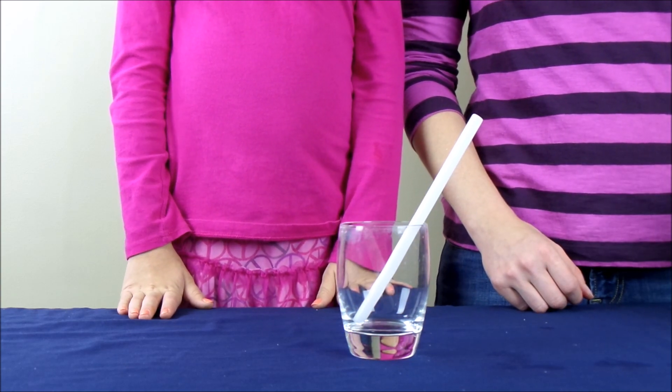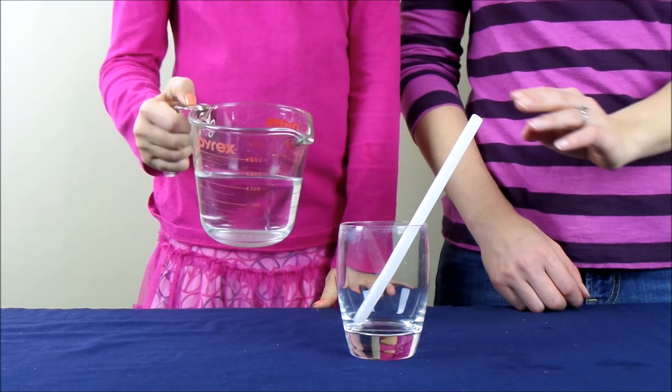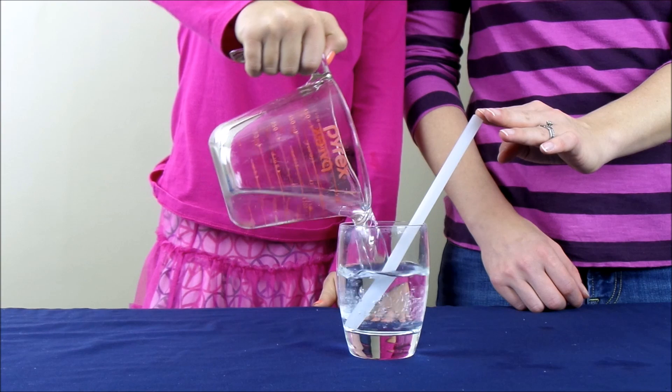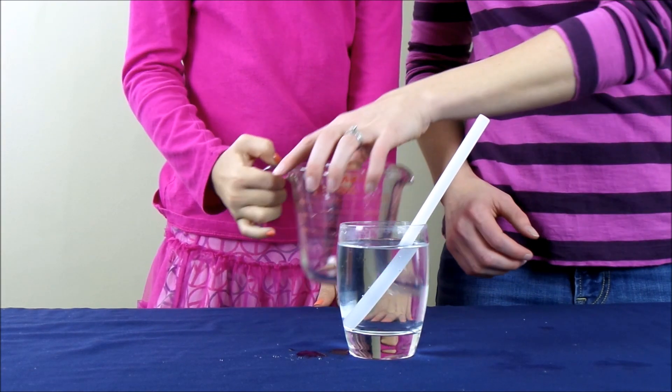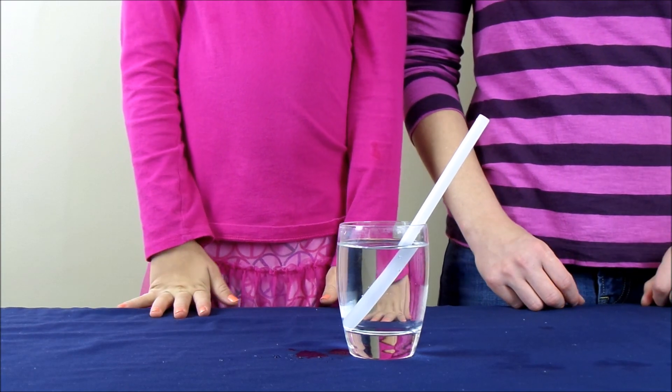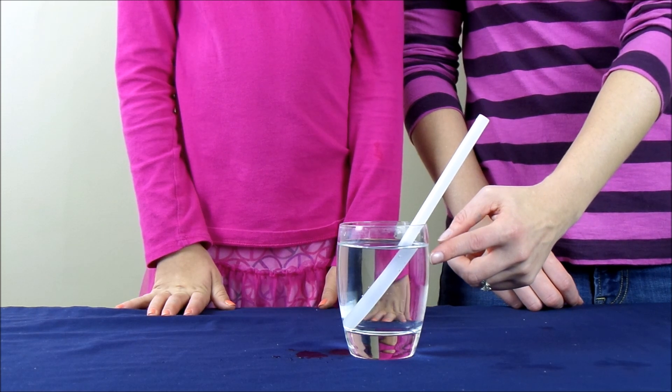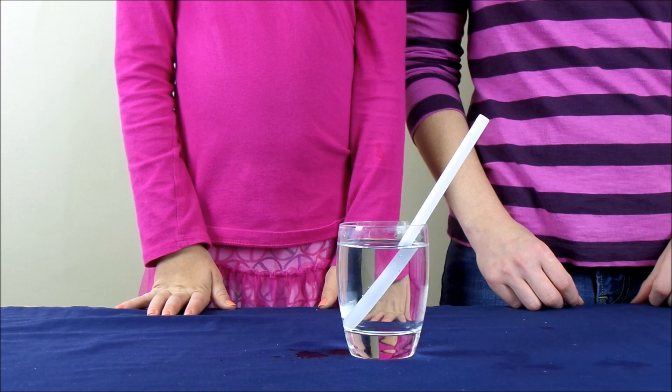Now let's find out what happens when we add some water to the glass. As you can see, the straw is bent. Let's take a closer look.